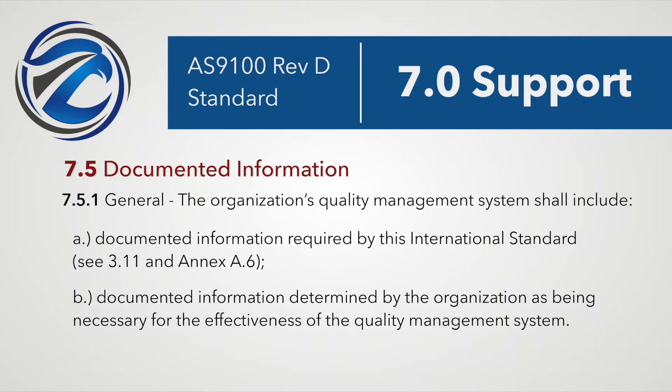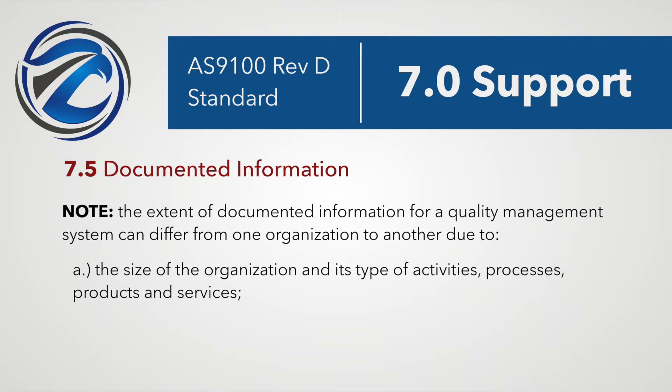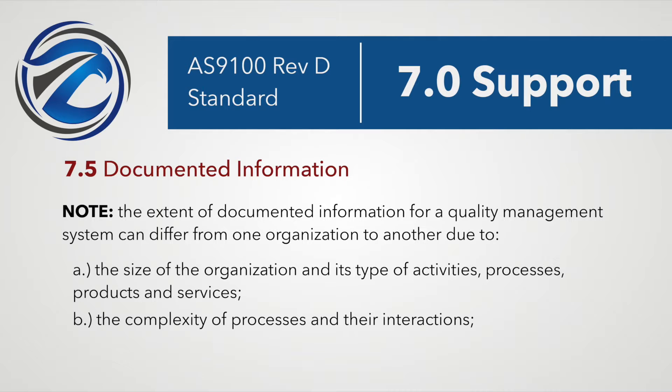Section 7.5.1 General states: the organization's quality management system shall include — A: documented information required by this standard, and B: documented information determined by the organization as being necessary for the effectiveness of the quality management system. The extent of documented information can differ due to the size of the organization, complexity of processes, and competence of persons.